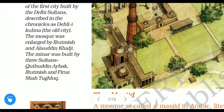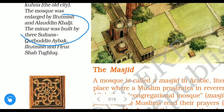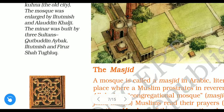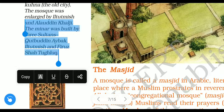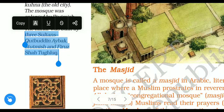The minar was built by three sultans: Qutb-ud-din Aibak, Iltutmish, and Firuz Tughlaq. Remember these names — they are the sultans who built the minar.